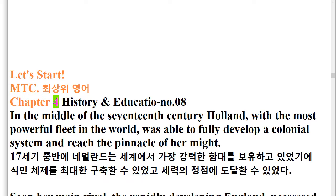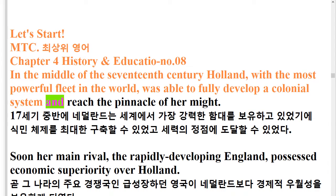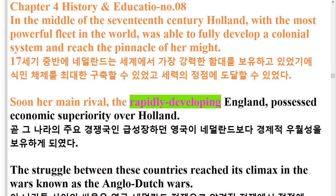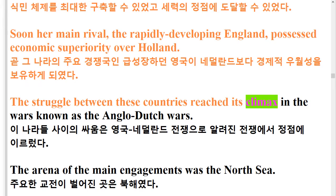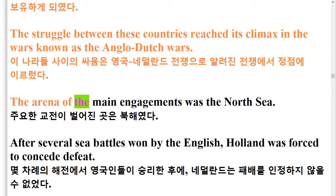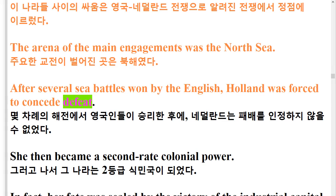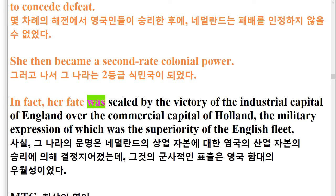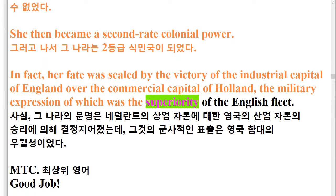In the middle of the 17th century, Holland, with the most powerful fleet in the world, was able to fully develop a colonial system and reach the pinnacle of her might. In total sea battles won by the English, Holland was forced to concede defeat. She then became a second-rate colonial power. Her fate was sealed by the victory of the industrial capital of England over the commercial capital of Holland, the military expression of which was the superiority of the English fleet.